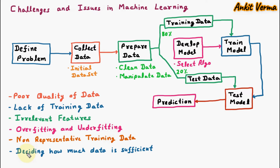The next challenge is deciding how much data is sufficient. In the machine learning process, we initially collect data, but how much data we should collect for our problem is not defined. Based on assumption we collect the data, which may be less or more than required — we don't have any clear idea. This is a challenge in machine learning.